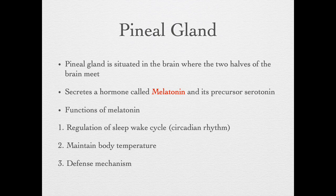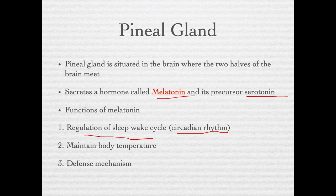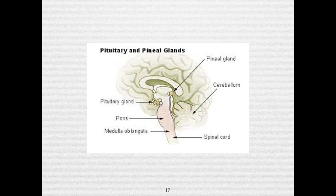The next gland is the pineal gland, situated in the brain where the two halves meet. It secretes a hormone called melatonin and its precursor serotonin. The pineal gland regulates the sleep-wake cycle or circadian rhythm, which dictates when an organism needs to sleep and stay awake. The pineal gland is present in almost all vertebrates to regulate this circadian rhythm. Melatonin also helps maintain body temperature and has a small role in the body's defense mechanism.